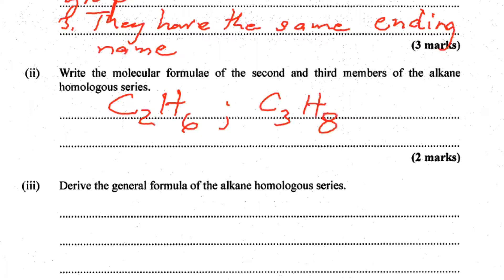From this, in part three, we're asked to derive the general formula of the alkane homologous series. If you know it, you could just write it. But looking at what we have here — C2H6 for ethane, C3H8 for propane — we're seeing that the number of hydrogen atoms is twice the number of carbon atoms plus two. So from that, we could write CnH2n+2, where n represents the number of carbon atoms.